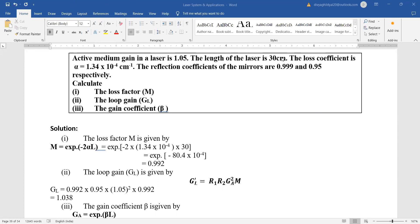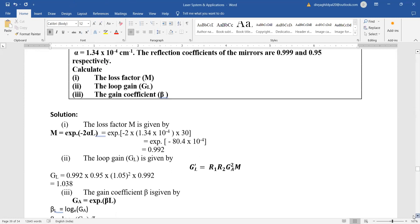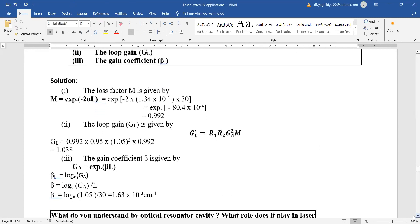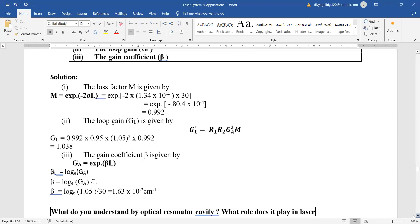The loss coefficient and reflection coefficient of the mirrors has been given. You have to find the loss factor, loop gain and gain coefficient. You can see how we will first be putting the formulas which we have derived above and put the numerical values given to us to get the answer.